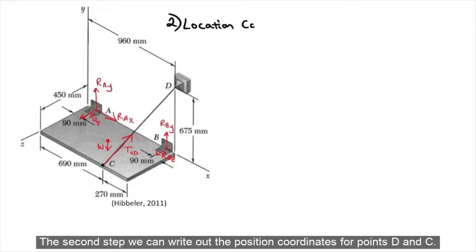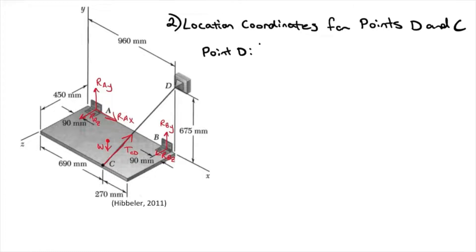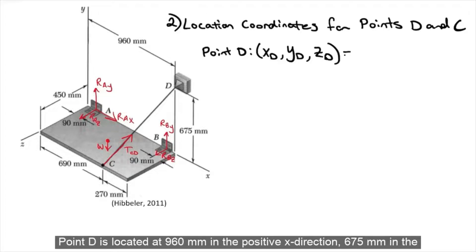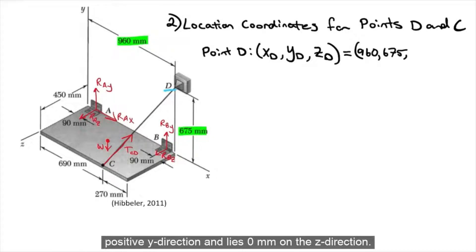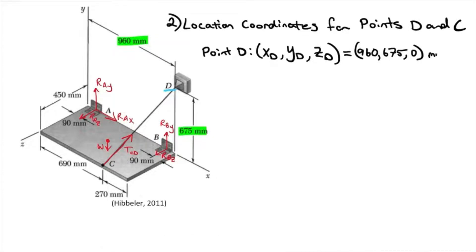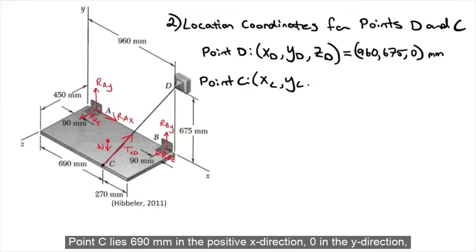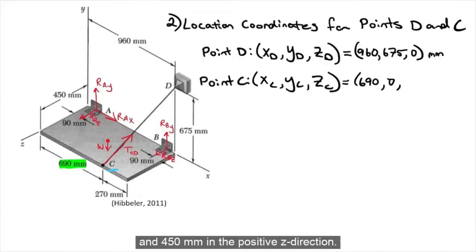The second step, we can write out the position coordinates for points D and C. Point D is located 960 mm in the positive x direction, 675 mm in the positive y direction, and 0 mm in the z direction. Point C lies 690 mm in the positive x direction, 0 in the y direction, and 450 mm in the positive z direction.